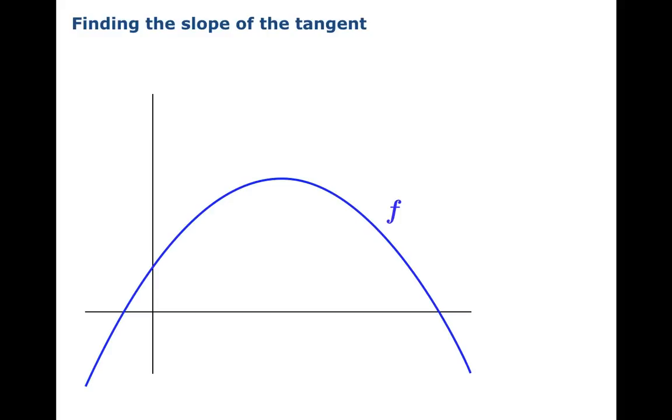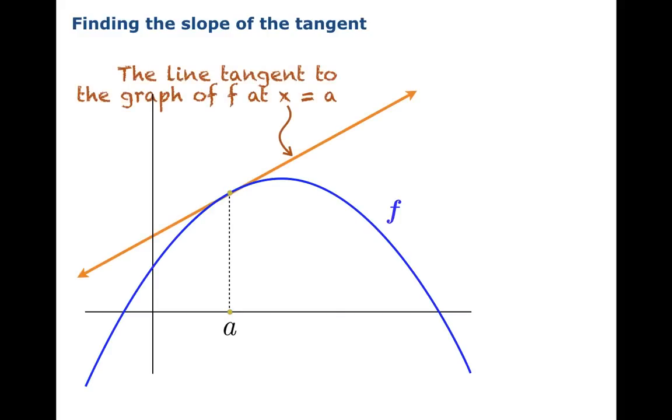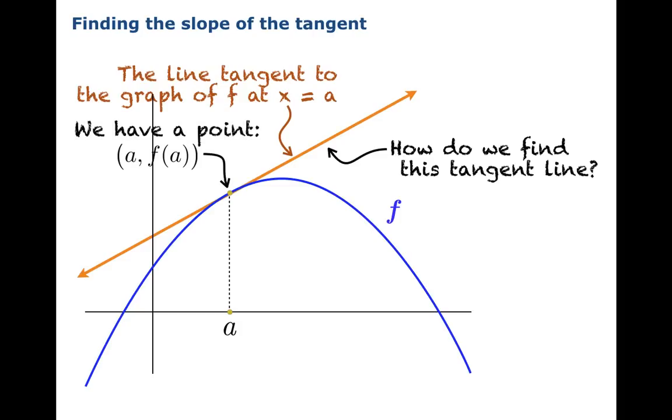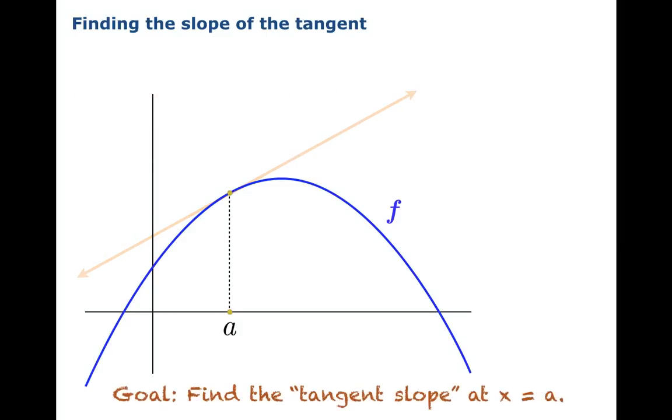Suppose you pick an argument, and here's what we clearly have in mind to be the tangent line at this argument. The question then is, how do we find this tangent line? We have a point already, (a, f(a)). So we have a point on the line. That means the only other thing we need to know is the slope. So really, this all boils down to the issue: what is the tangent slope at x equals a?